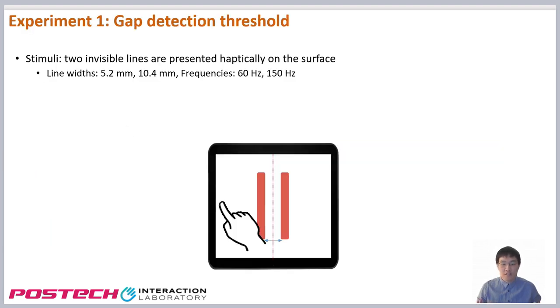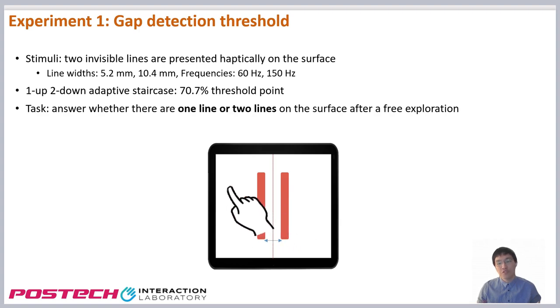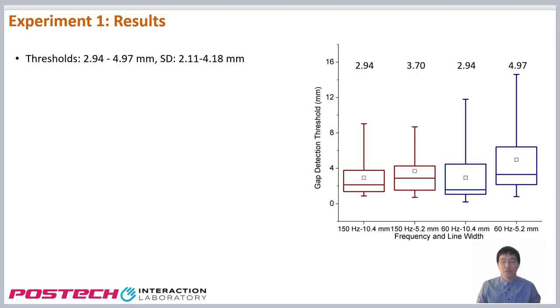The first experiment investigated the gap detection threshold. We used a one-up-two-down adaptive staircase method. The gap width between two invisible haptic lines was adjusted during the staircase. Results showed that the thresholds were about 3 to 5 mm with a large deviation.